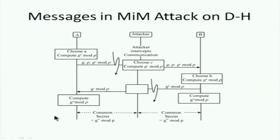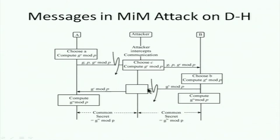There's a well-known attack on this: the standard man-in-the-middle attack. A chooses private key 'a' and sends G^a mod P. The attacker stands in the middle, chooses a number 'c', computes G^c mod P, and sends that to B instead. B thinks G^c mod P came from A. B also computes G^b mod P and sends it; the attacker intercepts and replaces it with G^c mod P and sends that to A.